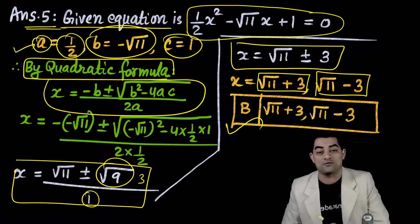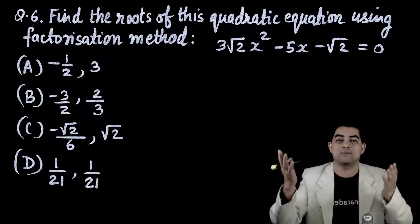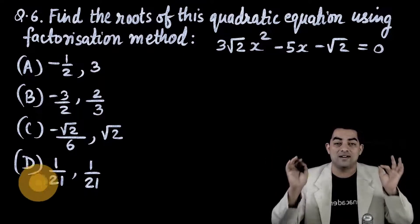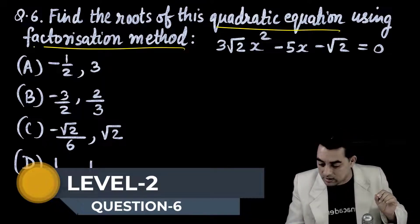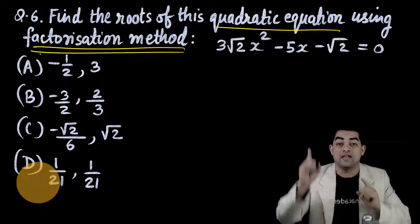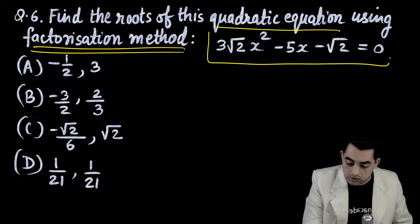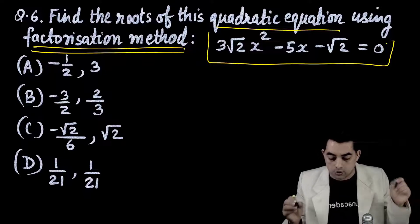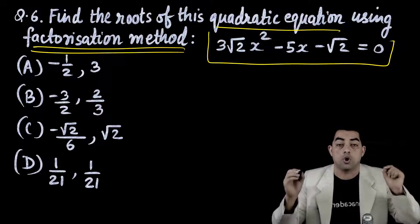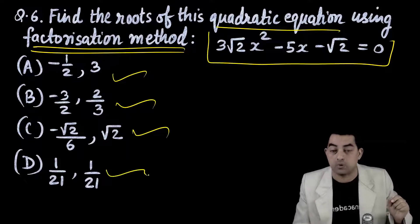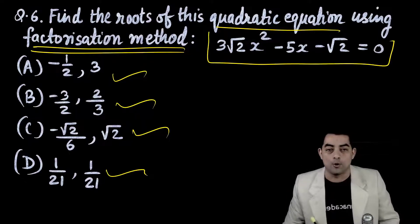Question number 6: find the roots of 3√2·x² - 5x - √2 = 0 using factorization method. Four options are given. Pause the video, solve it, and report your answer.